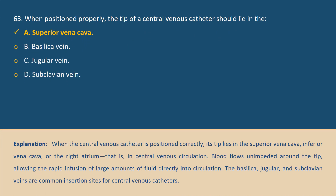Answer A. When the central venous catheter is positioned correctly, its tip lies in the superior vena cava, inferior vena cava, or the right atrium — that is, in central venous circulation. Blood flows unimpeded around the tip, allowing the rapid infusion of large amounts of fluids directly into circulation. The basilic, jugular, and subclavian veins are common insertion sites for central venous catheters.